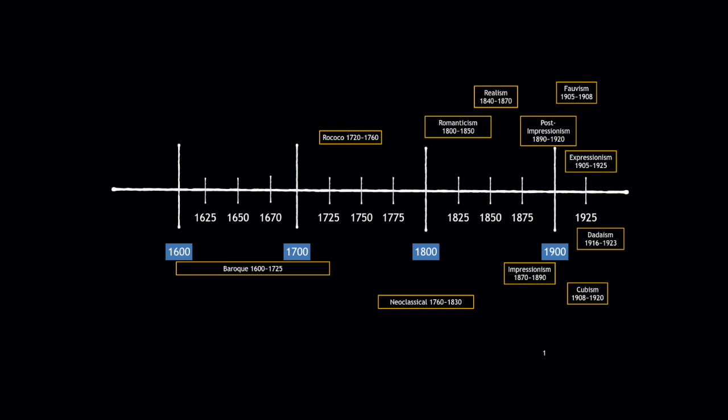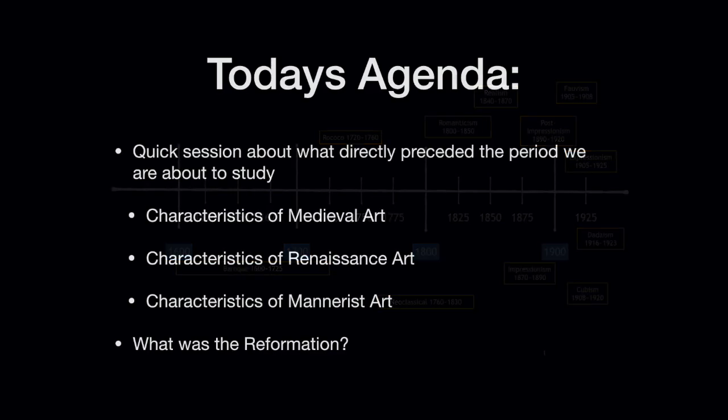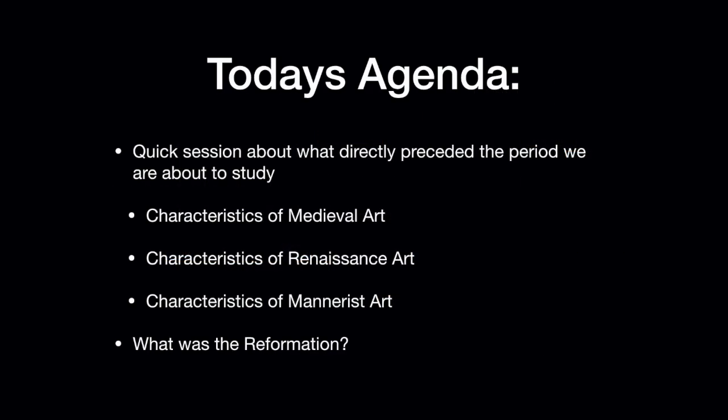Today we're going to discuss a few different art movements that absolutely reflected what Baroque art became. We're going to talk about the characteristics of medieval art, Renaissance art, Mannerist art, and a very significant historical event called the Reformation. We'll cover the Reformation more in the next lecture as well — I'm probably going to talk about the Reformation all the way until the end of the semester, so it would behoove you to learn about it early on.